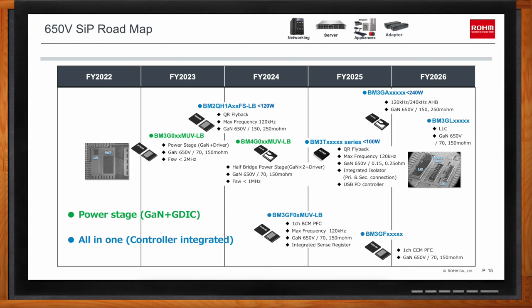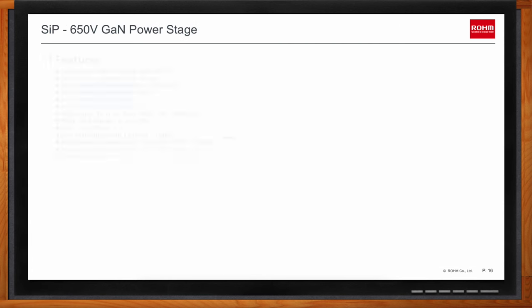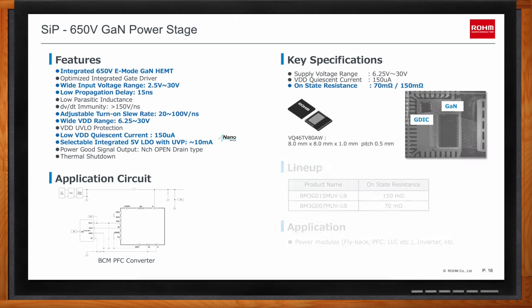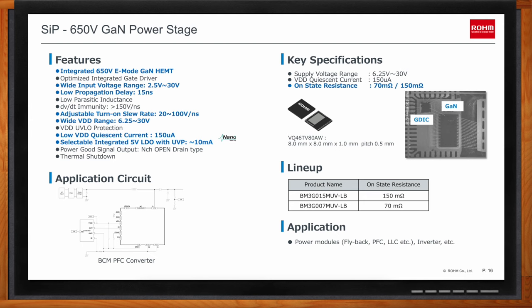These SiP products will simplify your designs, allow you to design smaller and more efficient products, improve system reliability, and simplify your supply chain with single components replacing a number of products. Each 650-volt GaN power stage SiP combines a gate driver with the GaN transistor into a single compact 8mm by 8mm package. Key specs include a wide input voltage range of 2.5 to 30 volts and a low propagation delay of only 15 nanoseconds. These SiPs are available in 70 and 150 milli-ohm on-resistance values, ideal for power modules, inverters, and more.